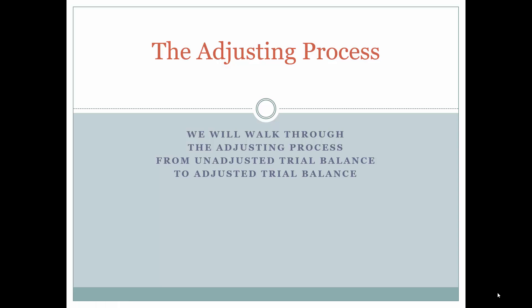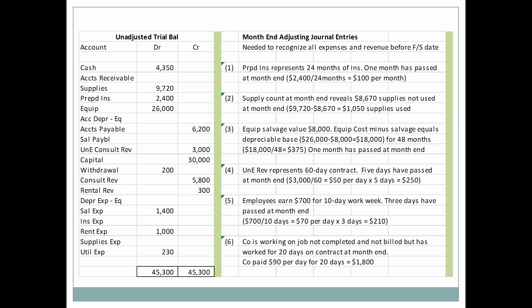Starting where we left off on the last video, let's look at the adjusting process. We're going to go from the unadjusted trial balance we had previously to the adjusted trial balance. We need to recognize all revenue and expenses before the financial statement date, which means we will have to accrue and bring the financial statements up to date, primarily expenses. Remember, the hallmark of an adjusting journal entry is that it affects both one balance sheet account and one income statement account.